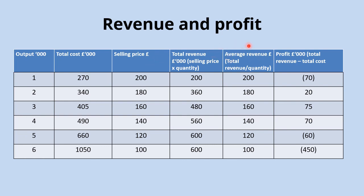Average revenue equals selling price because if you do selling price times quantity to get total revenue, and then divide total revenue by quantity to get average revenue, you're back to the selling price. Later in the course when drawing cost and revenue curves, you'll find the average revenue curve is actually equal to the demand curve. Finally, profit is calculated as total revenue minus total cost — figures in brackets indicate a loss, while positive figures represent profit earned by the business.